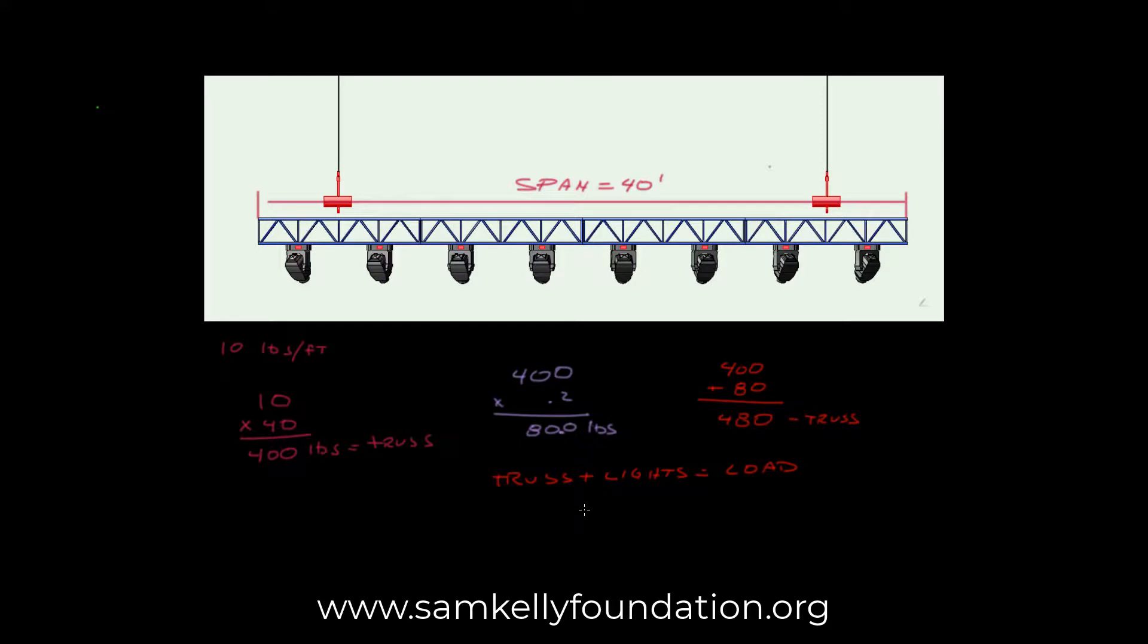All right, so our truss is 480. Our lights, remember, are 720. Zero, zero, one. Four plus one is five, plus seven is 12. So we're looking at 1,200 pounds of our load. We have 1,200 pounds.